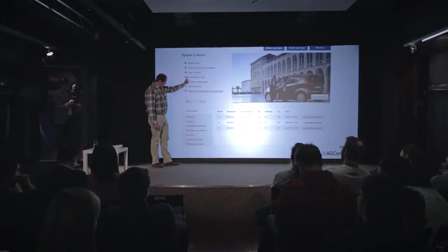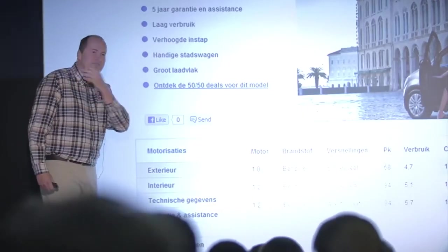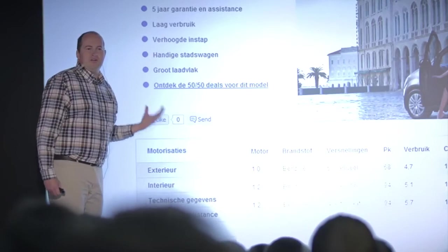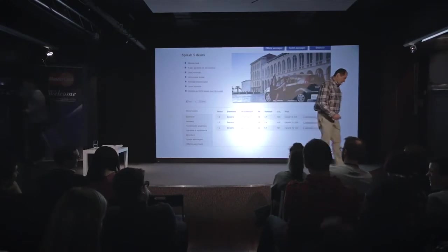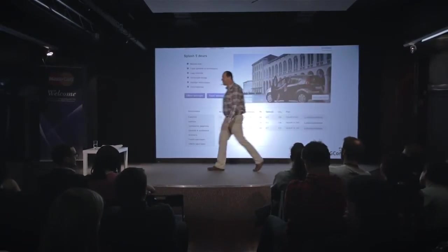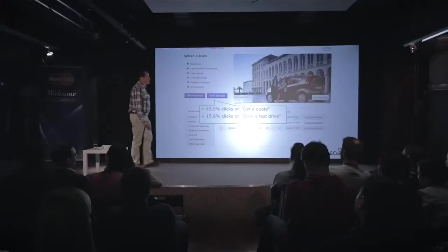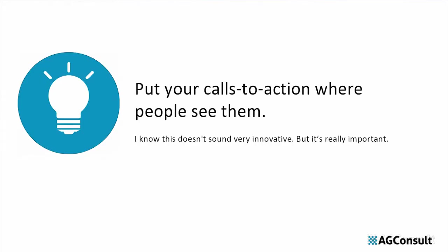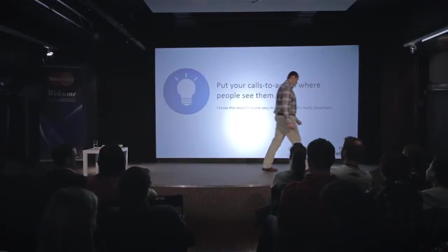So we moved the buttons away from where they were — replacing those social share buttons that nobody used. Would you ever share a Suzuki car on your Facebook? The most popular Suzuki car is the Swift in Belgium and it had six shares in one year. So we dumped those social buttons, put the call to actions in that area, and saw an increase of 46% in people asking for a quote and booking a test drive. My first tip — not very innovative, but very important — put your call to action where users can actually see them.